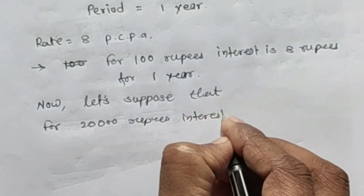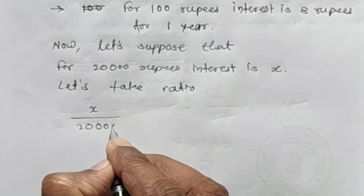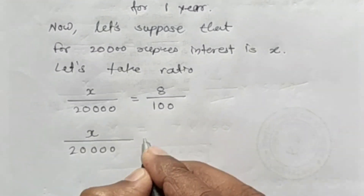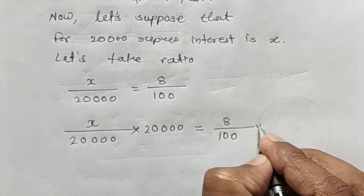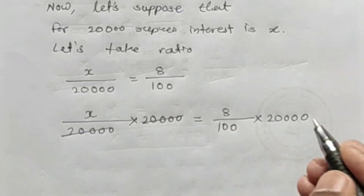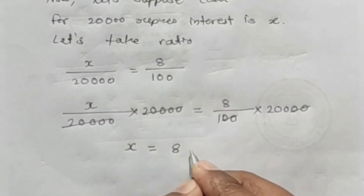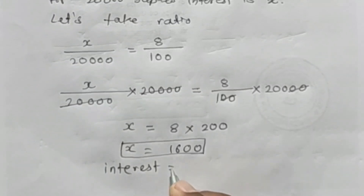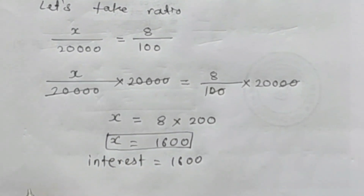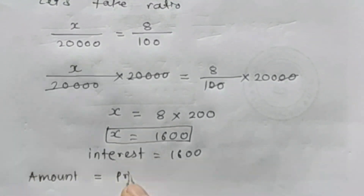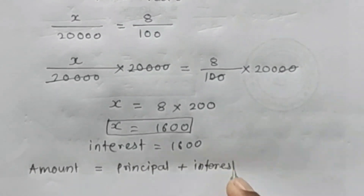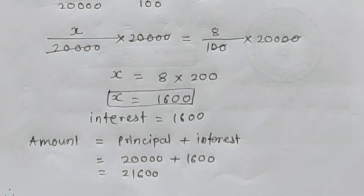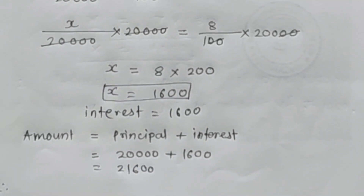To calculate: x divided by 20,000 is equal to 8 upon 100. Solving this, multiply both sides by 20,000. The 20,000 gets cancelled on one side, two zeros cancel on the other, so 8 multiplied by 200 equals 1,600. So the interest is 1,600 rupees. Now, the question asks for the total amount. Amount equals principal plus interest: 20,000 plus 1,600 equals 21,600 rupees.